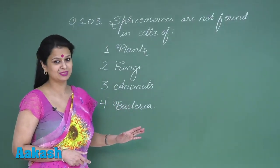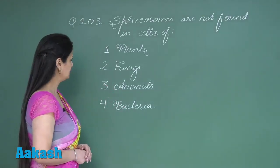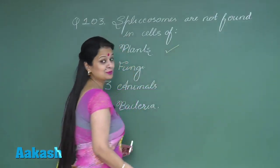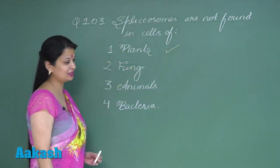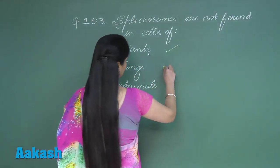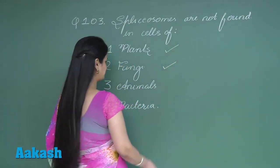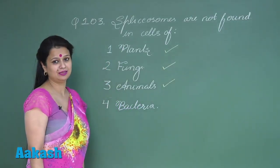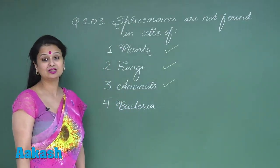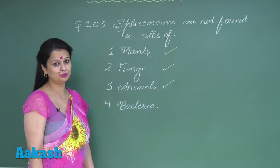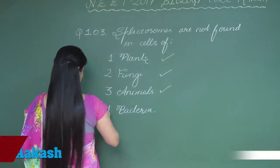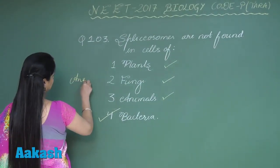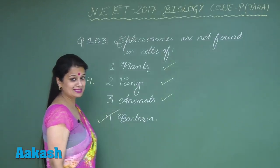Introns are present in eukaryotes — so in plants, the spliceosomes help in the removal of introns. In fungi, spliceosomes are present. In animals, they are present as well. But in bacteria, introns are absent, so there is no usage of the spliceosome. Therefore, the right option for this question is option number four.